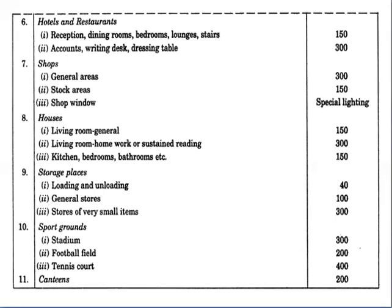For accounts and writing areas, dressing tables: 300 lux. Shops — general areas: 300 lux; stock areas: 150 lux; shop windows have special lighting. Houses — living room general: 150 lux; home work or sustained reading: 300 lux; kitchen, bedrooms, bathrooms: 150 lux. Storage places — loading and unloading: 40 lux; general stores: 100 lux; stores for very small items: 300 lux. Sports grounds and stadiums: 300 lux; football field: 200 lux; tennis court: 400 lux; canteens: 200 lux.